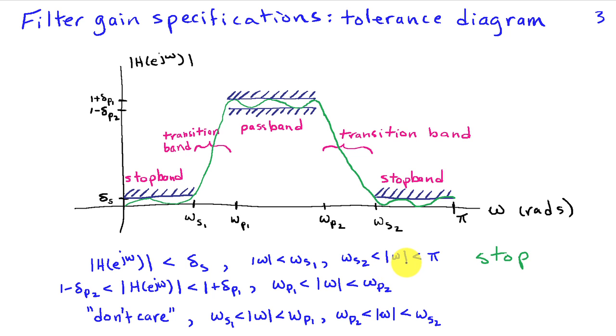And then the magnitude of omega between omega sub s2 and pi. Then in the pass band, we're going to require that the magnitude response of the filter lie between one minus delta P2 and one plus delta P1.